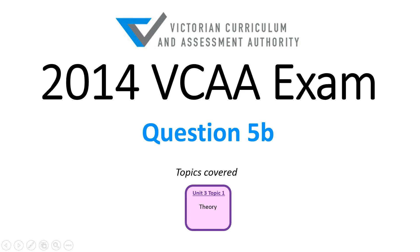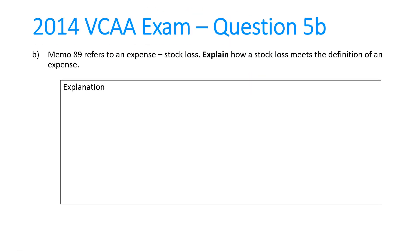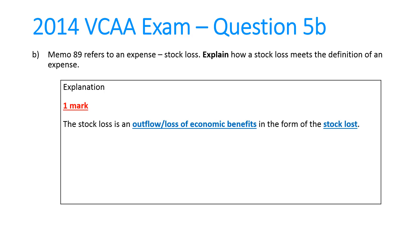5b was a theory question whereby memo 89 in the stock card you're given is an expense — it's a stock loss — and you're asked to explain how a stock loss meets the definition of an expense. An expense has three parts and we need to give each part and relate it to a stock loss. The first part is there must be an outflow or loss of economic benefits, and in this case that'll be the stock that's actually gone or been lost.